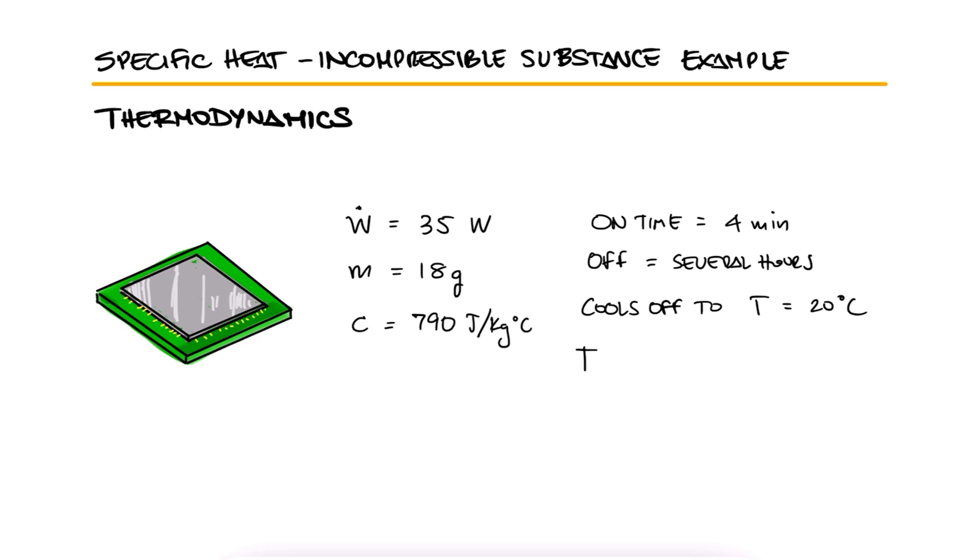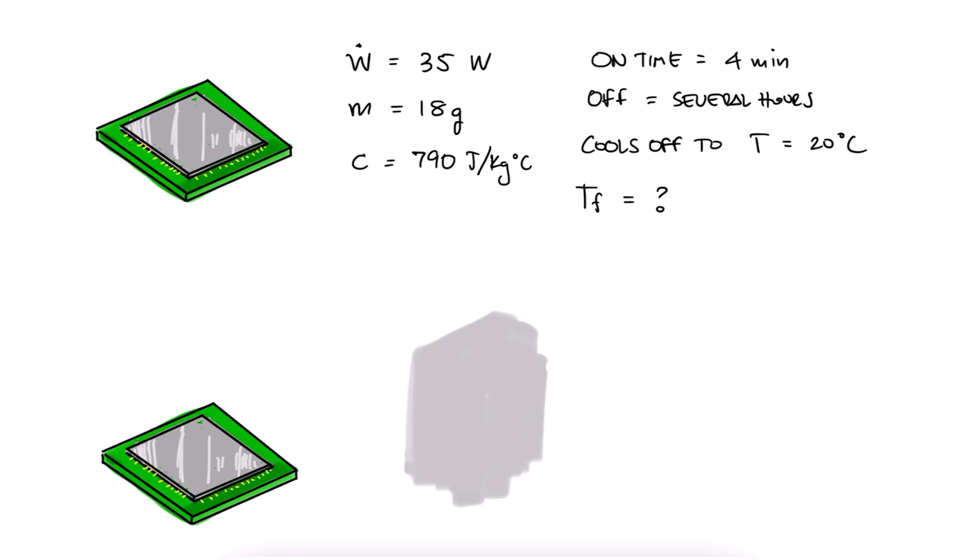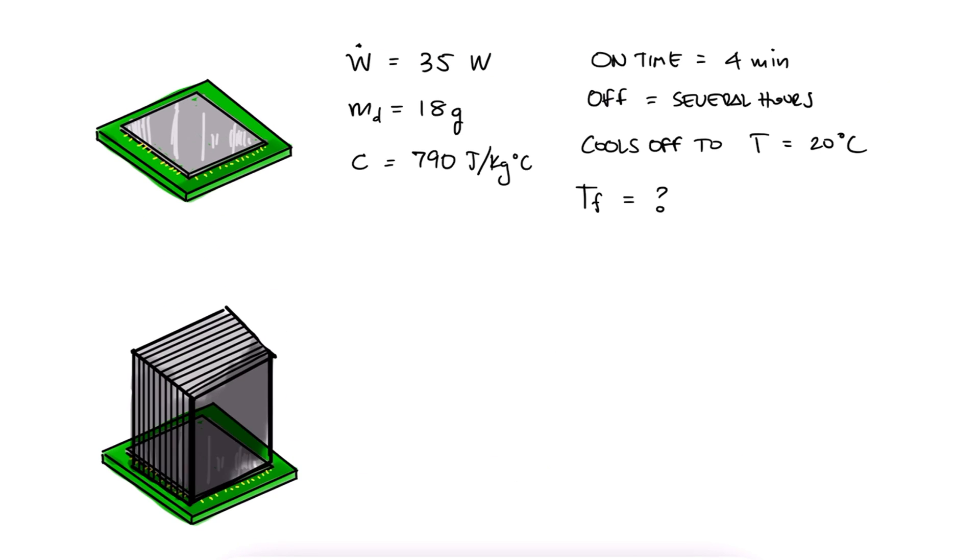Determine the highest possible temperature of the device at the end of the 4 minute operating period. How would your answer change if the device is now attached to a 0.4 kilogram aluminum heatsink? Assume the device and the heatsink to be isothermal.